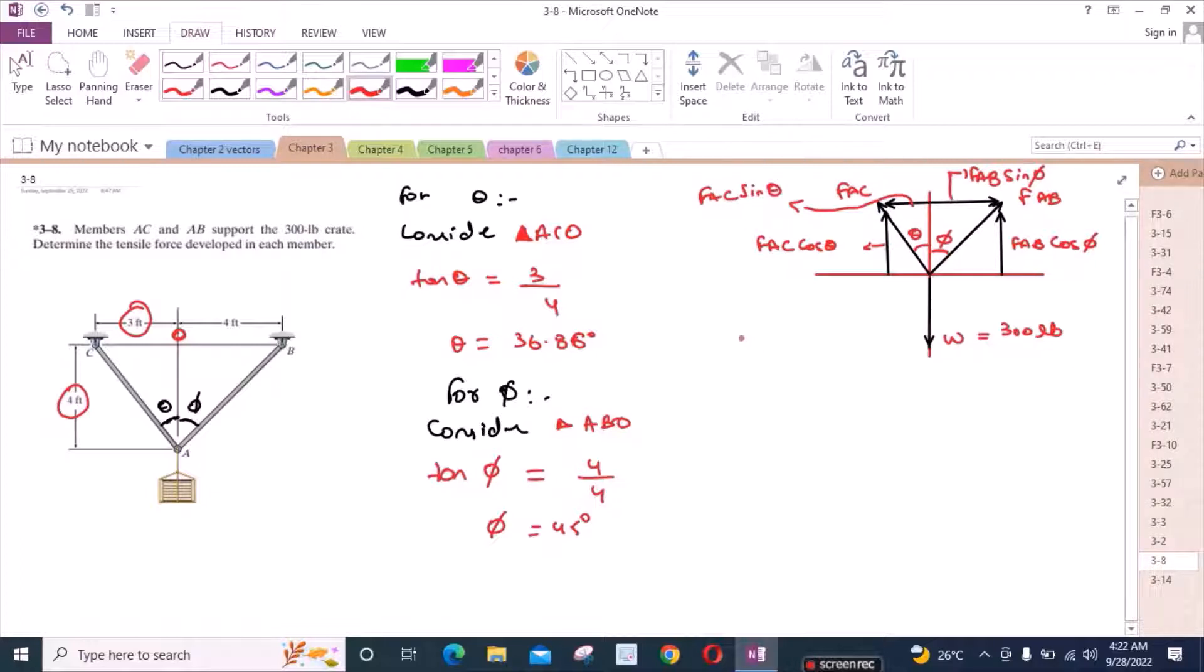Now we can use the equations of equilibrium. We have sum of the forces in x direction equals to zero. I'm considering right hand side as positive. So we have FAB sin phi, and phi is 45 degrees, minus FAC sin theta, and theta is 36.86 degrees. We have FAC sin 36.86 degrees equals to zero. Let's call this equation 1.